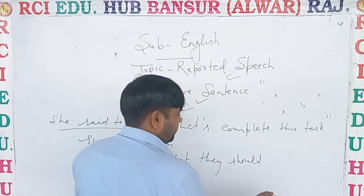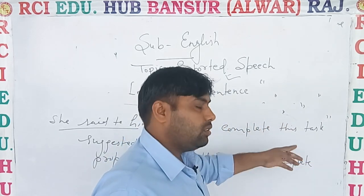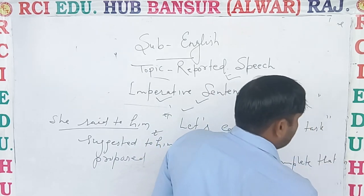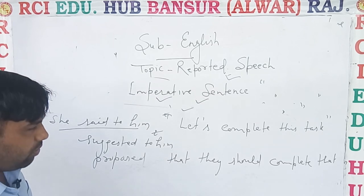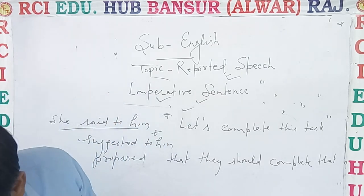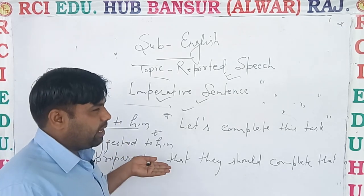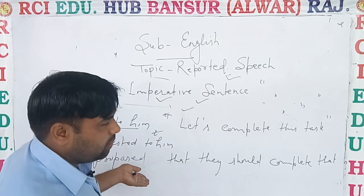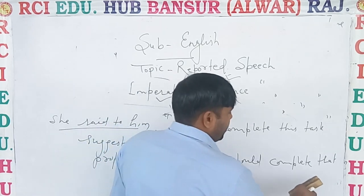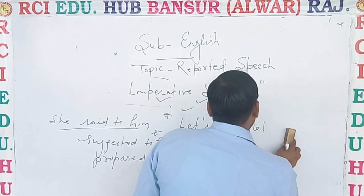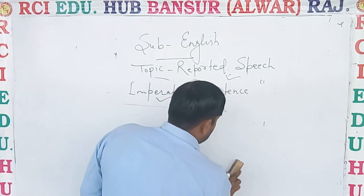Soon we will complete this. 'This' changes into 'that', 'I' will change accordingly, 'now' changes into 'then', 'this' changes into 'that'. I will make a table so that you can understand. Today changes into 'that day', tomorrow becomes 'the next day' or 'following day', yesterday becomes 'the previous day'. These are some word changes — I will tell you and make a table so it will be clear.